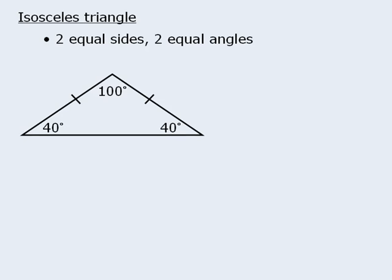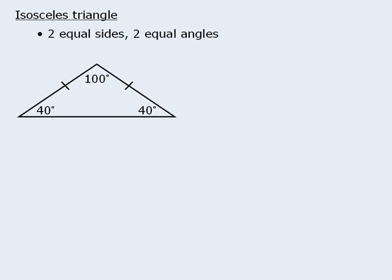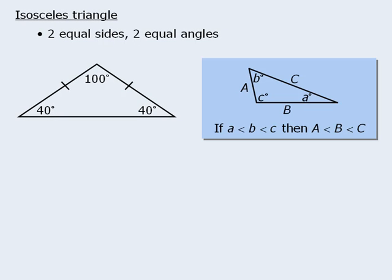Notice that this triangle complies with our rule that says the angles of a triangle correspond to their opposite sides. In this example, we have two equal sides, and the two angles opposite these sides are also equal.